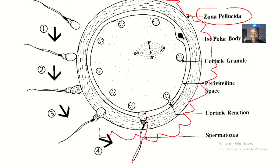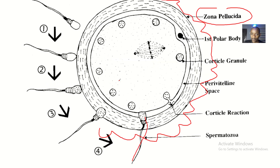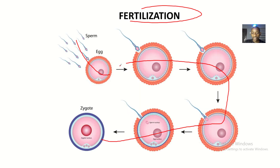Then there is binding and fusion of the plasma membrane of the oocyte and sperm. When the sperm gets to the egg, there is binding and fusion of the two plasma membranes.